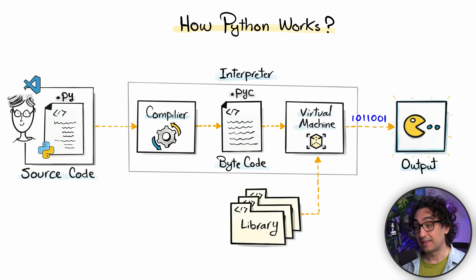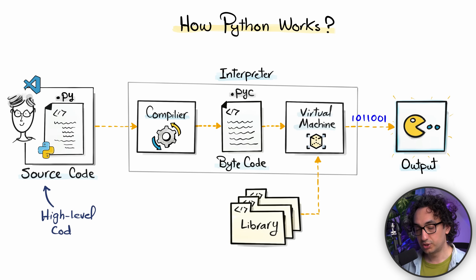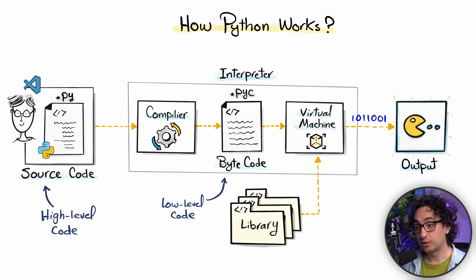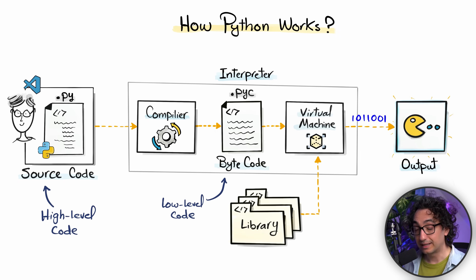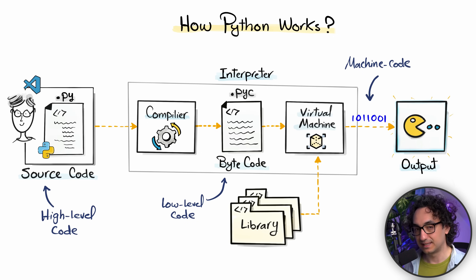All three steps — compile, translate, and execute — are called the Python interpreter. It is like a toolbox that handles everything needed to run Python code. You write Python code in a high-level language, Python compiles it and translates it to bytecode, and then the virtual machine takes your bytecode and libraries and runs it on your computer to produce results. This process happens every time you run Python code, and everything is automated behind the scenes.